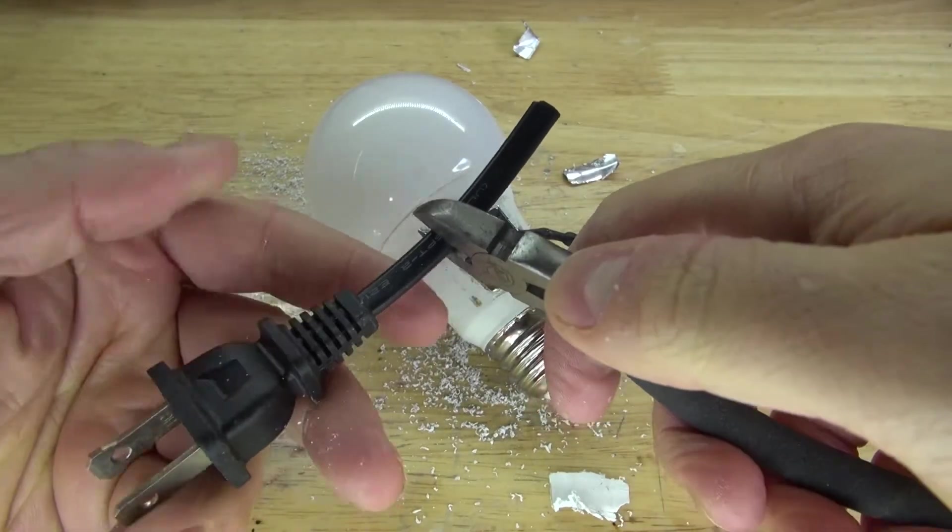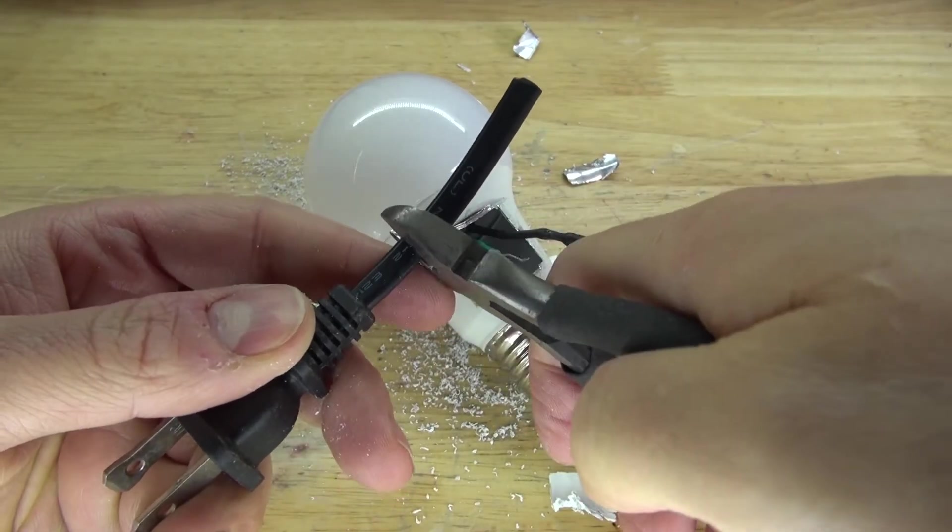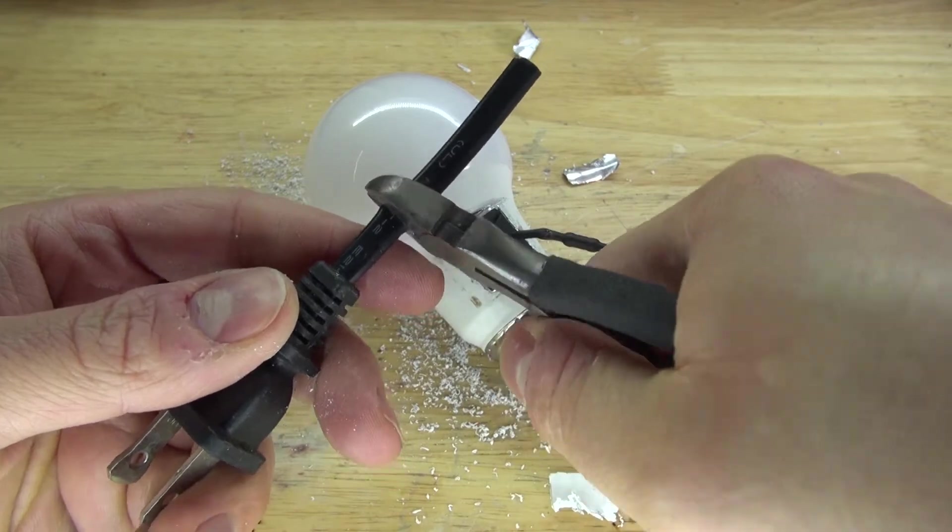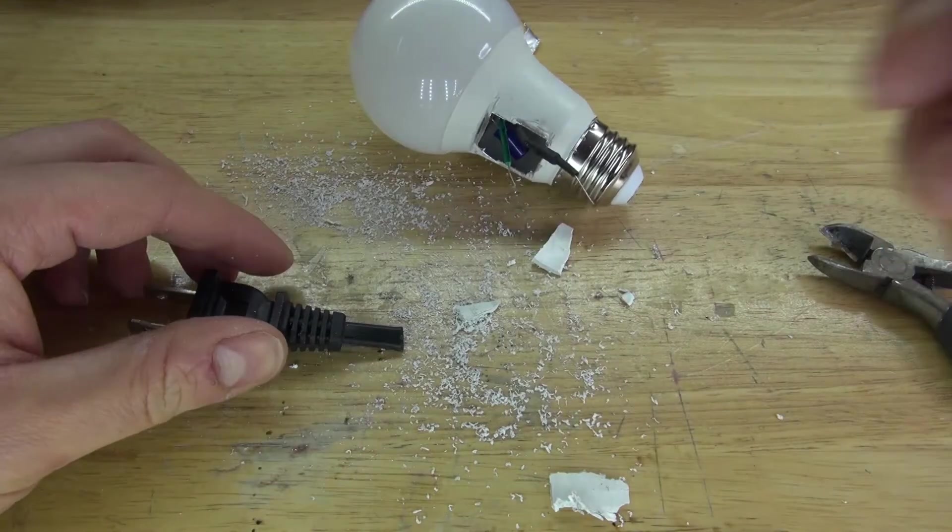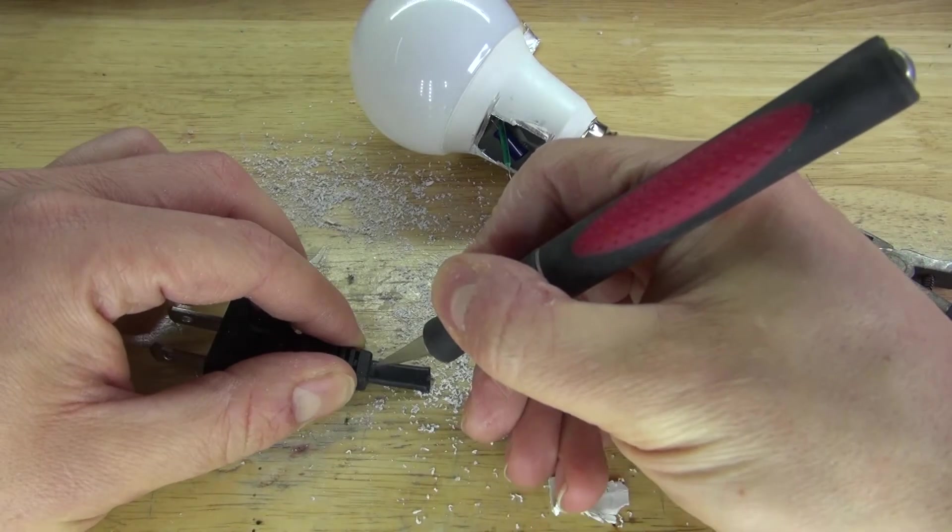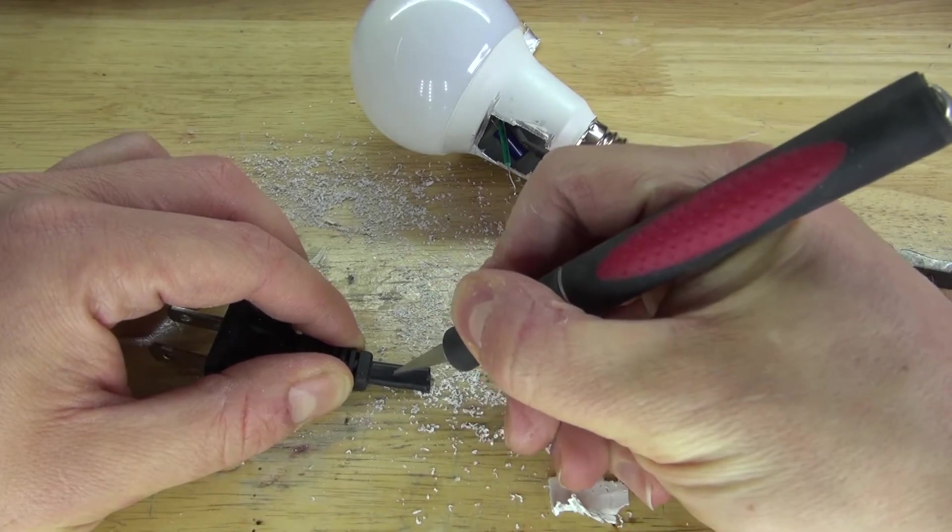Next take the electrical cord and shorten it. Next take an exacto knife and remove the outer insulation.